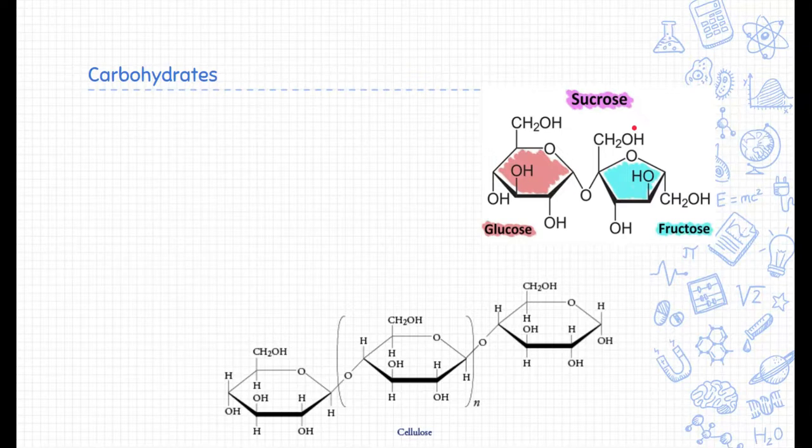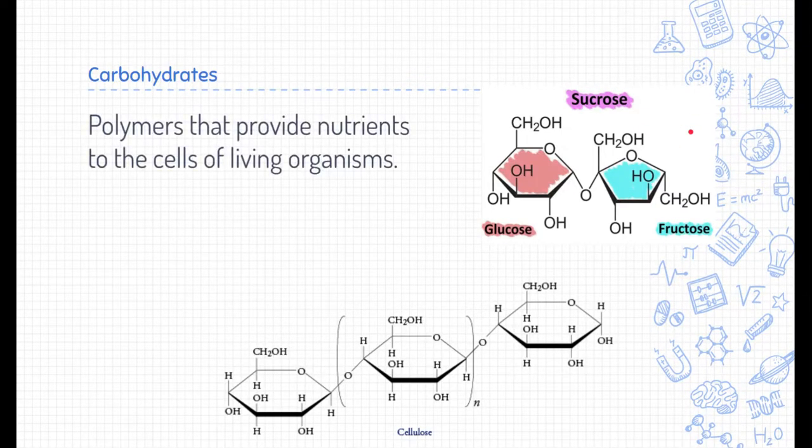The first natural polymer we're going to talk about are carbohydrates. Carbohydrates are polymers that provide nutrients to the cell of living organisms. An interesting thing about carbohydrates, they're typically made through photosynthesis, and so they have to be obtained by animals from plants and other living organisms that are able to produce them through the process of photosynthesis.